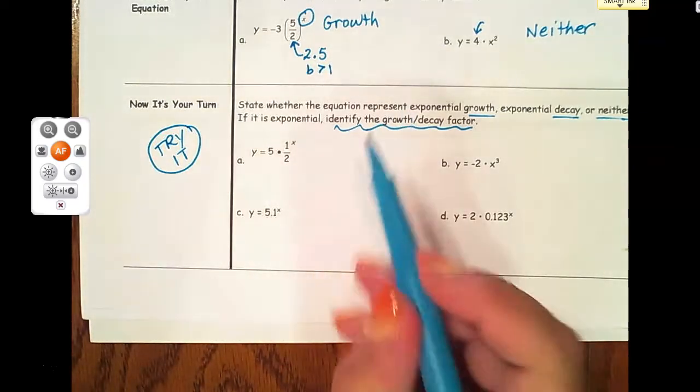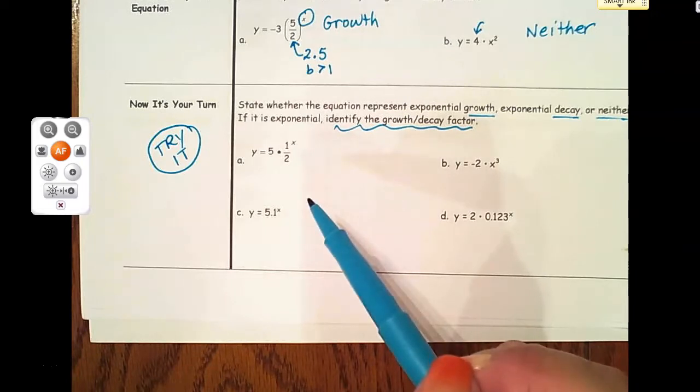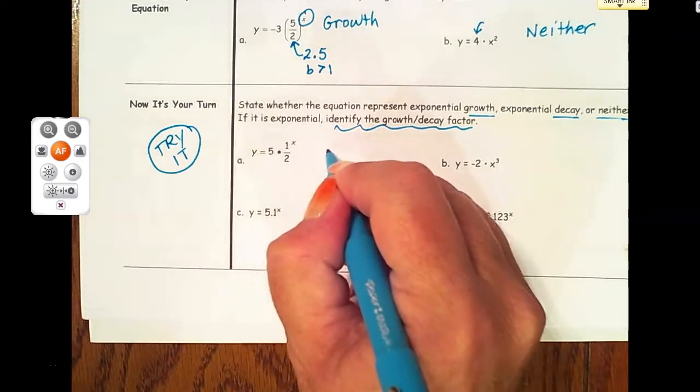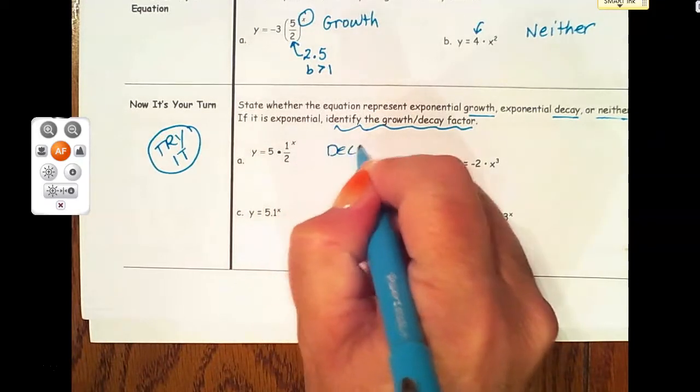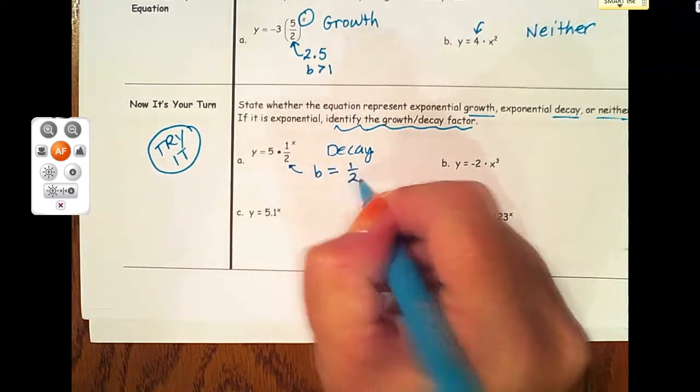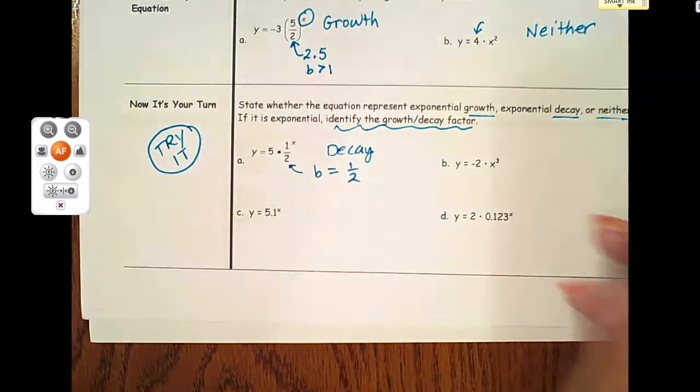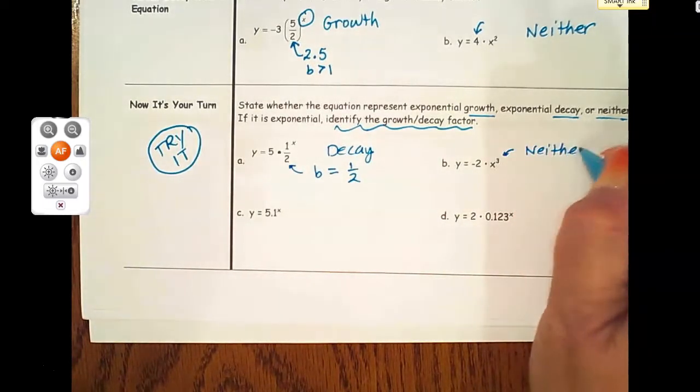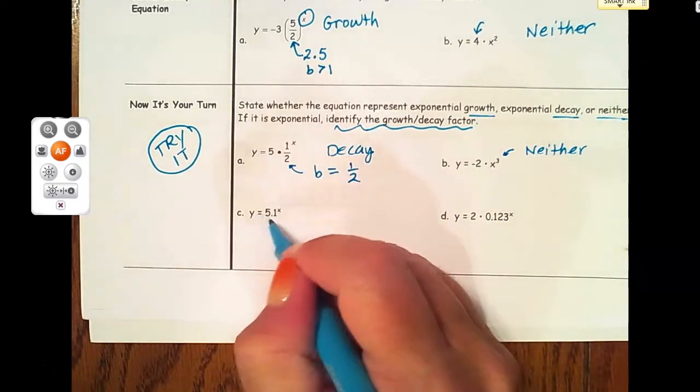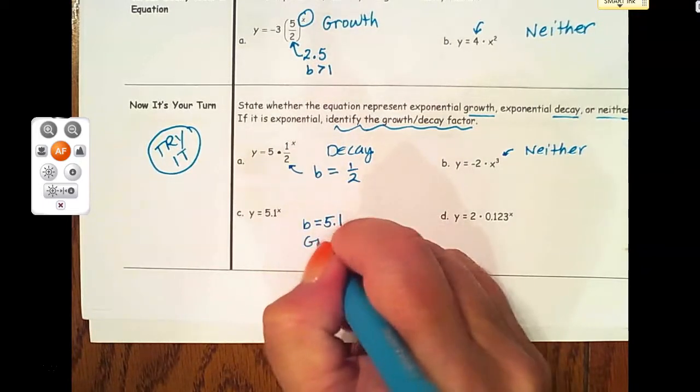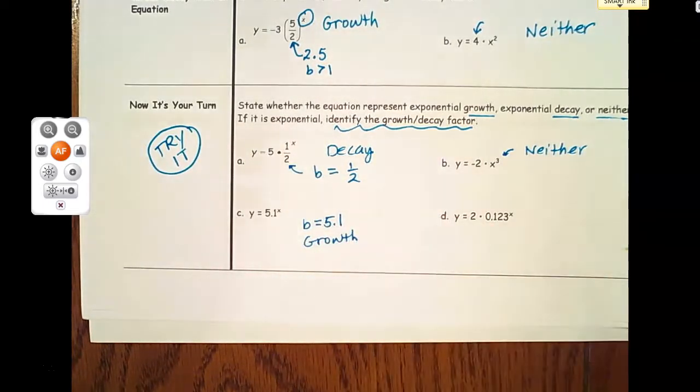Welcome back. Hopefully you paused the video and worked these on your own. Letter a is going to be a decay because my decay factor is a fraction. In letter b, we don't have an x for our exponent, so that is neither. I don't have an a value but I do have a b value - b is 5.1, so that tells me it's going to be a growth equation.